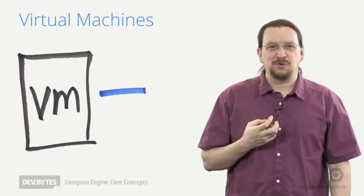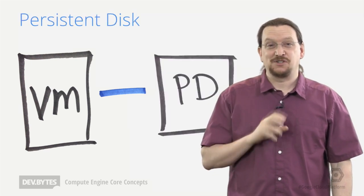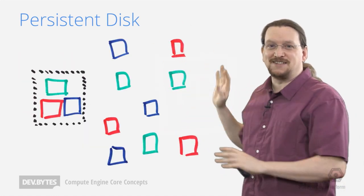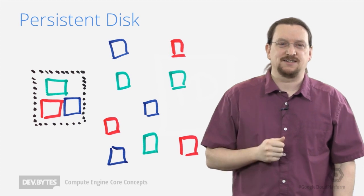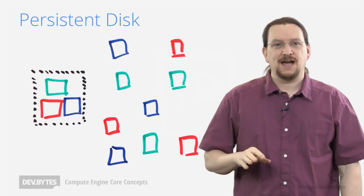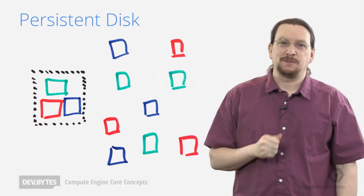All of these instances boot off of Persistent Disk, which is a logical block storage device that's spread out in the data centers. And it's been designed for high performance and very consistent I/O latency. If you already have a database you're happy with, this is a great place to host it, and any other latency sensitive workloads you have.